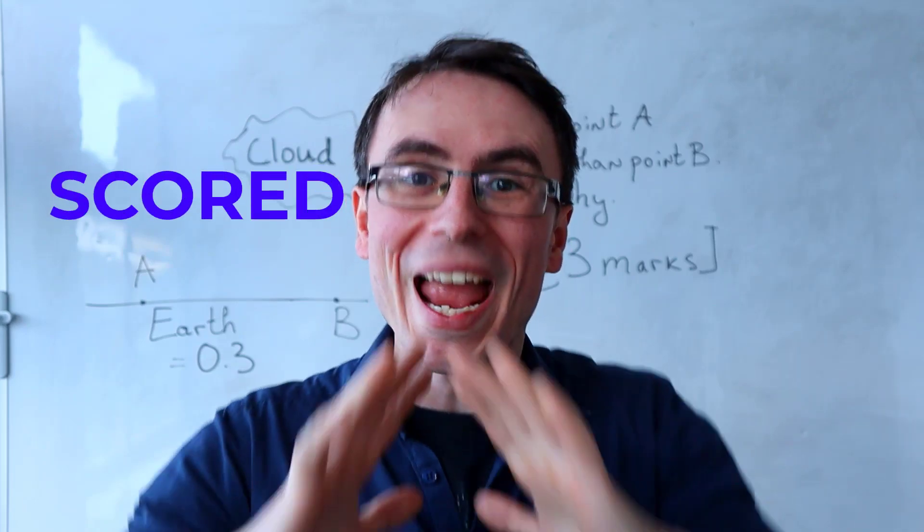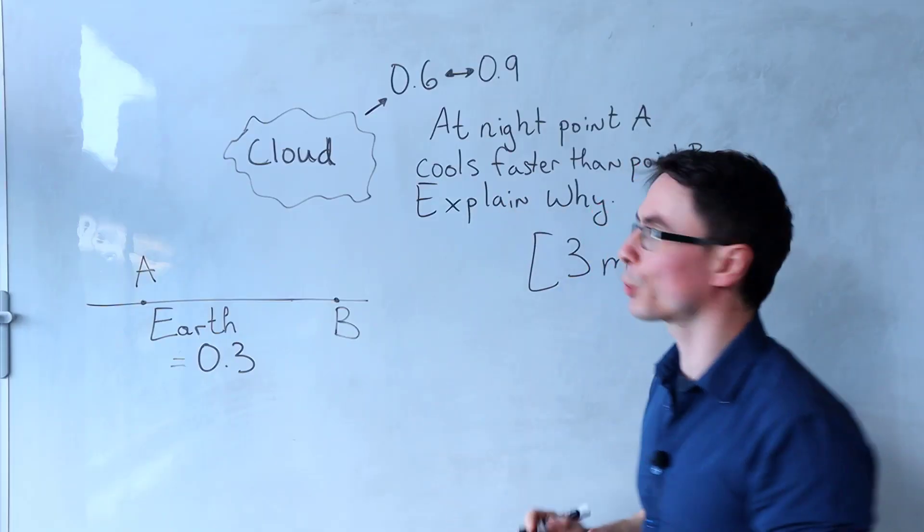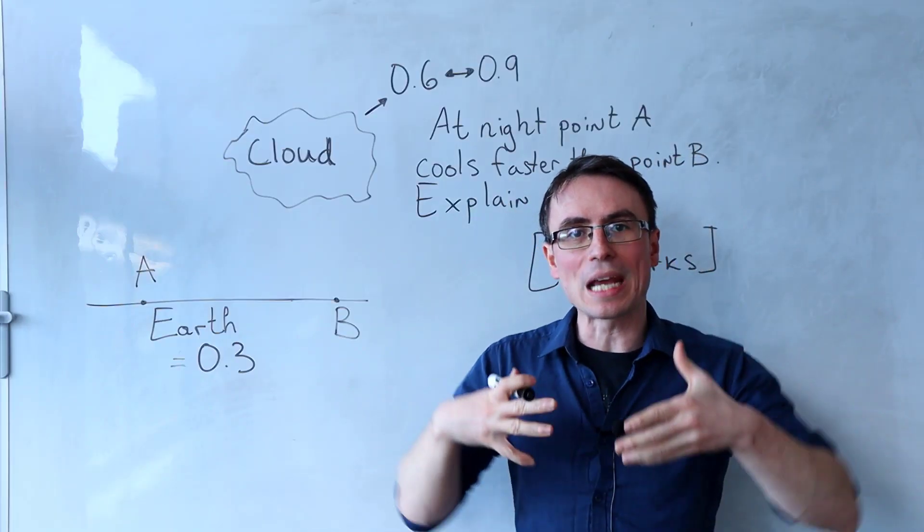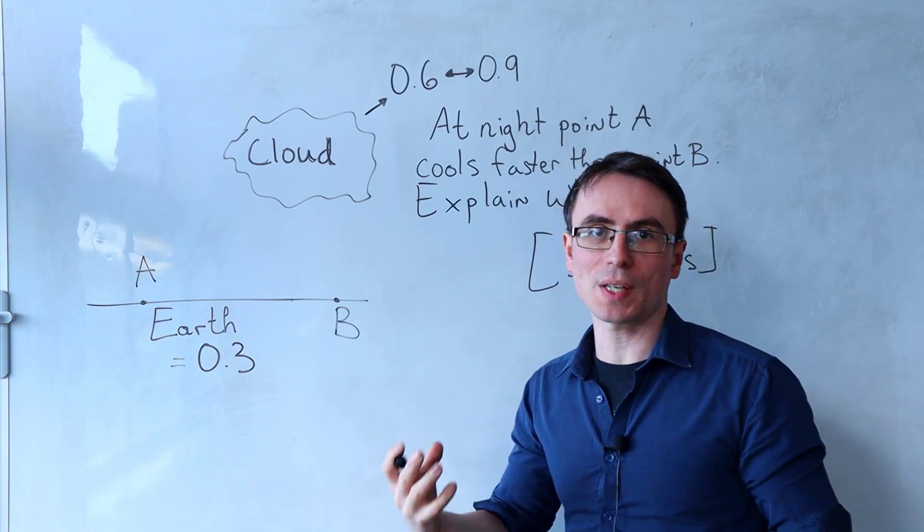Only a small number of students scored any marks on this GCSE physics question. First of all, we're introduced to something known as the albedo number, and that is a measure of how good of a reflector a substance is.